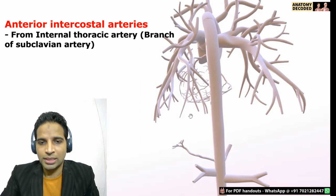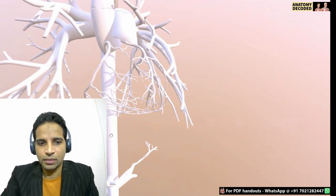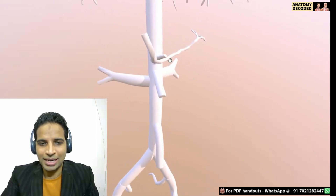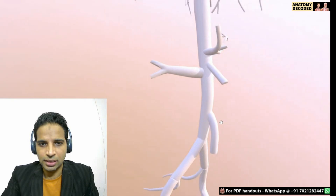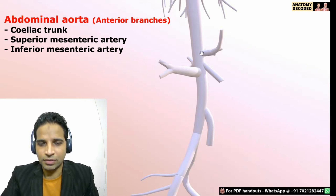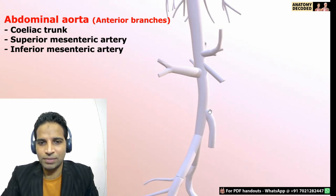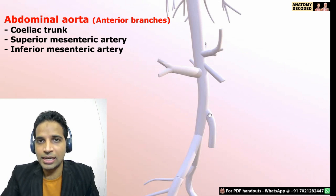The thoracic aorta continues and changes its name to the descending abdominal aorta when it crosses the diaphragm into the abdomen. We can see three branches from the anterior aspect of the abdominal aorta: the first is the celiac trunk at vertebral level T12–L1, then the superior mesenteric artery also at the level of L1 vertebra, and the inferior mesenteric artery. So the three anterior branches of the abdominal aorta are the celiac trunk, superior mesenteric artery, and inferior mesenteric artery.